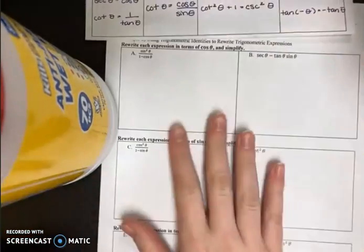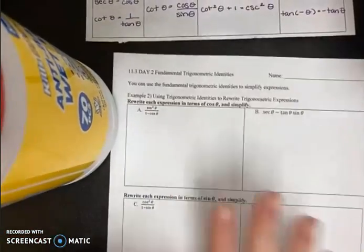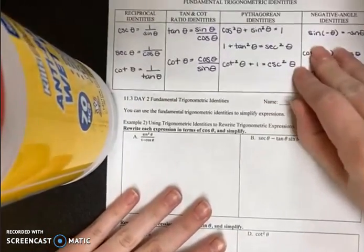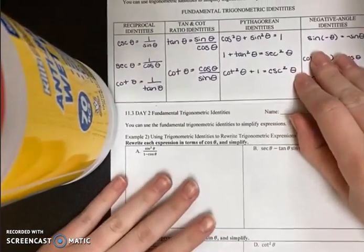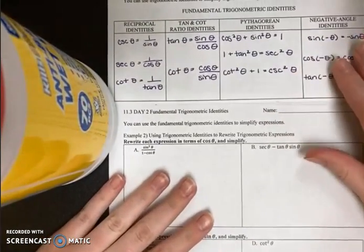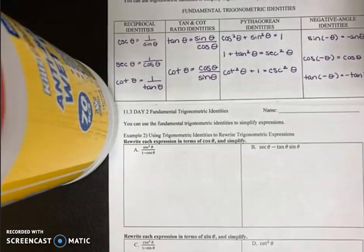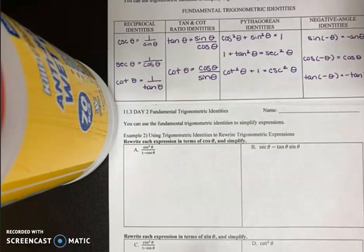I'm going to go ahead and put the identities at the top of my notes for now, and I'll move them down as I need to. What we're doing is we're going to be using identities to rewrite trigonometric expressions.